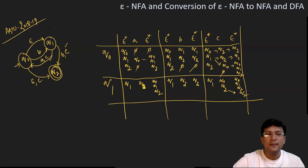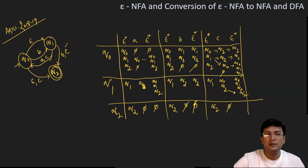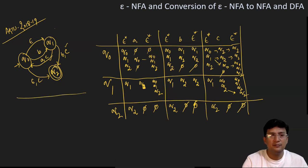Now the transitions from q2: epsilon closure of q2 is {q2}. On getting symbol 'a', it does not move anywhere. Similarly, q2 on 'b' does not move anywhere. On getting symbol 'c', q2 goes nowhere. So we are ready with all the epsilon closures and we can write the transition table for this NFA.